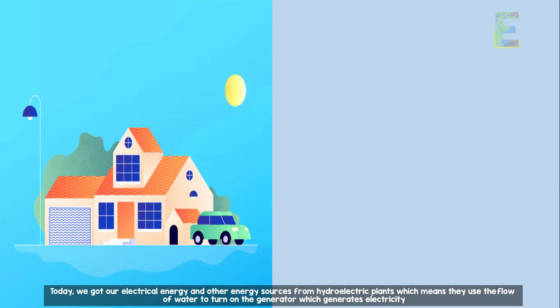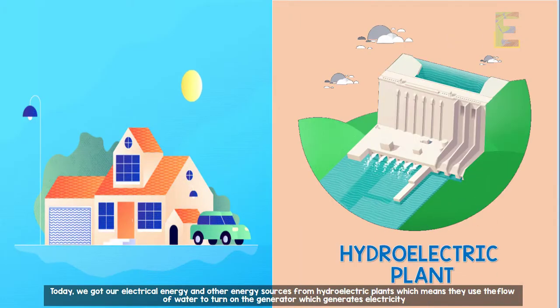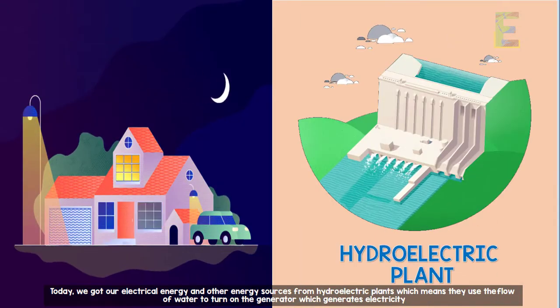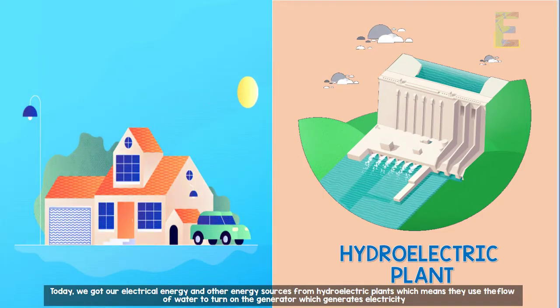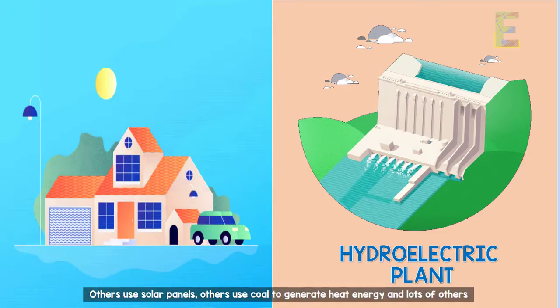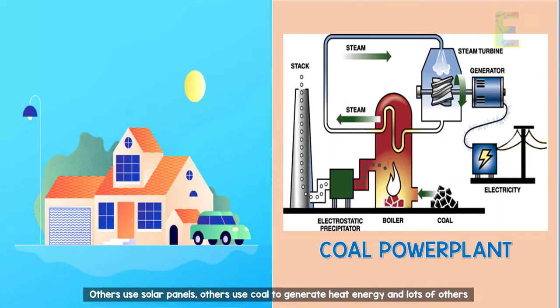Today, we get our electrical energy and other energy sources from hydroelectric plants, which means they use the flow of water to turn on the generator which generates electricity. Others use solar panels.